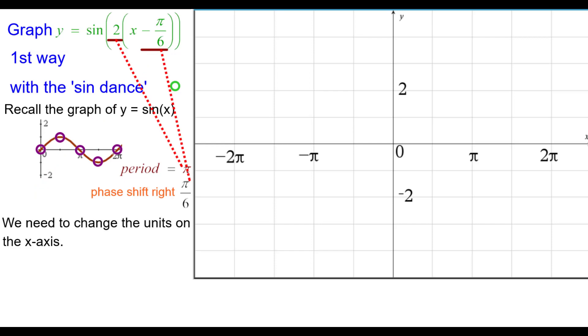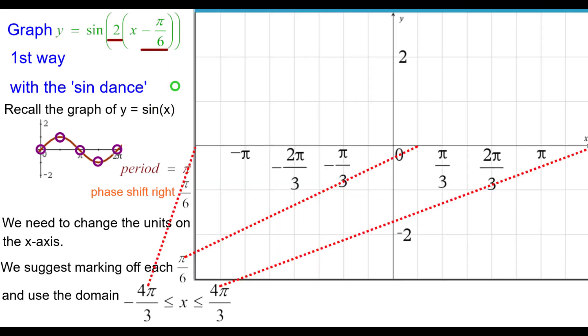We need to change the units on the x-axis so that we can plot this more easily. We suggest marking off every pi over 6 and using this domain, negative 4 thirds pi to positive 4 thirds pi. And that's what we did right here.